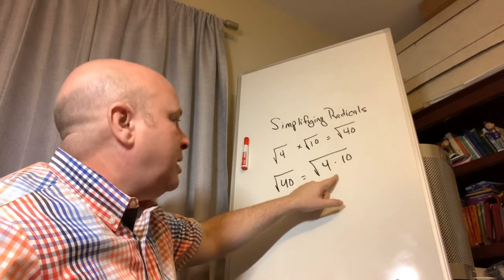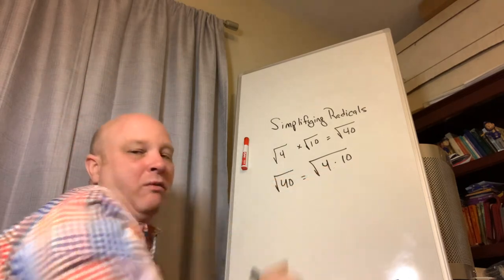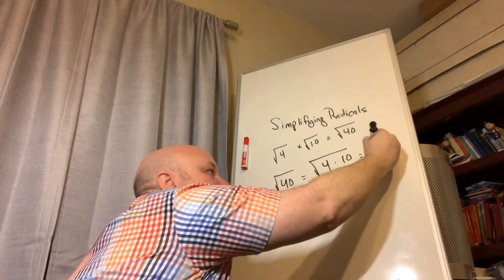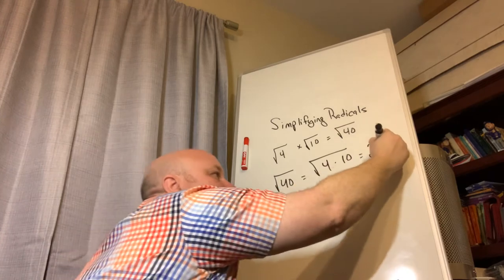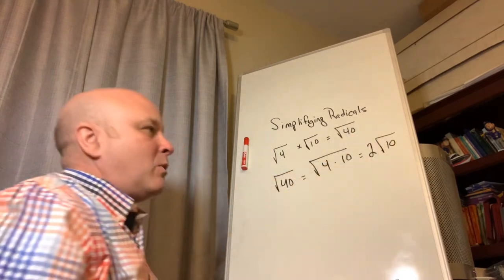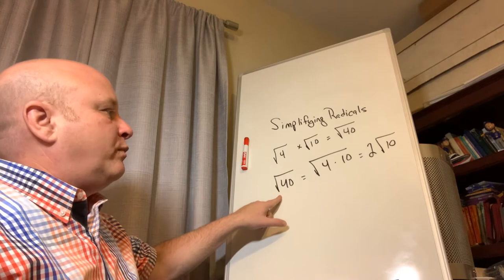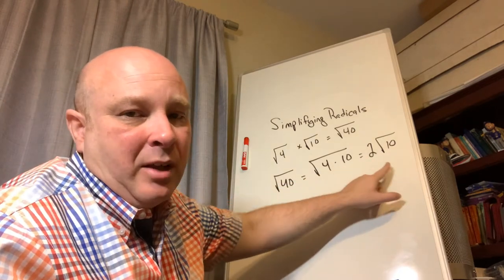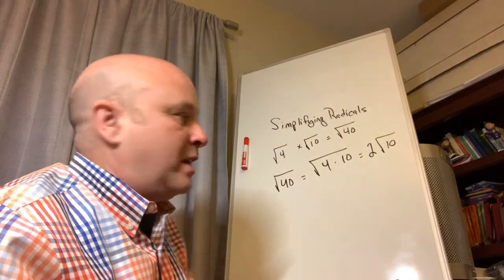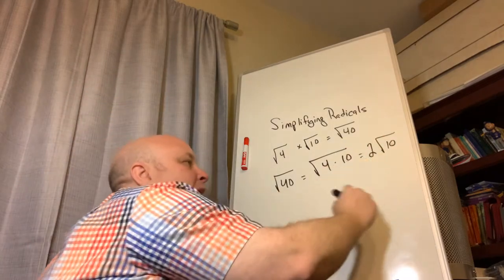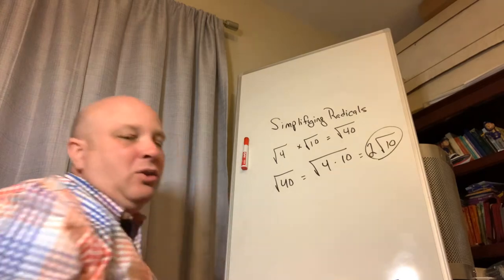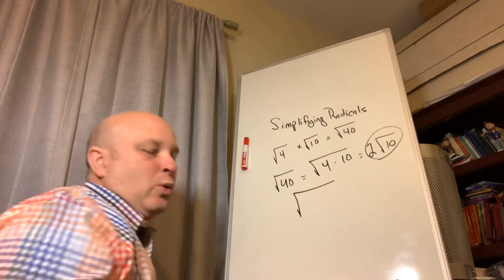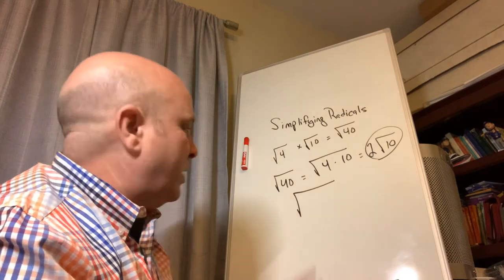The square root of 4 is 2. Now 10 is not a perfect square, so I can take the square root of 4 out and leave the 10 inside the radical. The square root of 40 equals 2 times the square root of 10 — written as 2 on the square root of 10 — and that's my final answer.